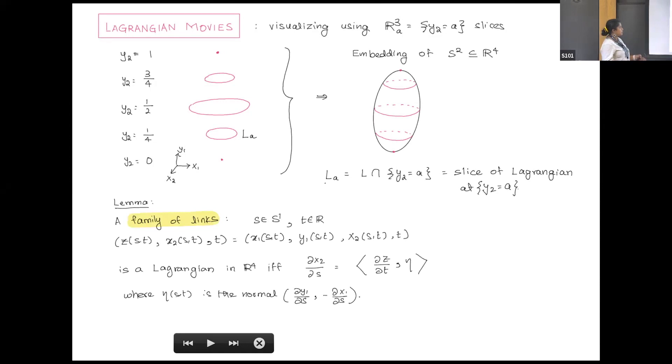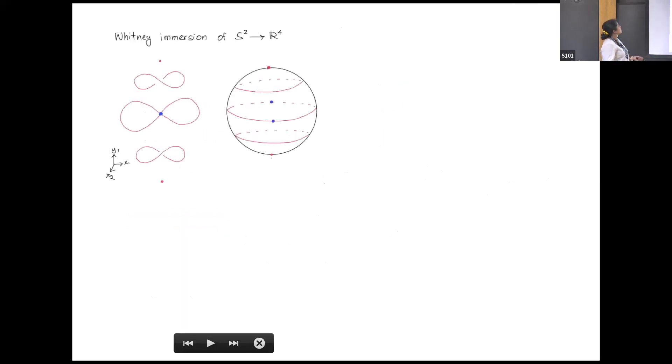Suppose you have a family of links or knots, and you want to know whether it's a Lagrangian. There's some sort of differential equation which will tell you that, but we don't need to worry about it. There's a Whitney immersion, giving you an exact Lagrangian immersion. There's one double point in blue in the center, like the equator intersects itself. It's exact, so each slice, when you project to the x1, y1 plane, the signed area it's bounding is zero. It has some more properties than just being Lagrangian.